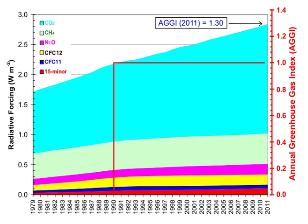The atmospheric lifetime of a species measures the time required to restore equilibrium following a sudden increase or decrease in its concentration in the atmosphere. Individual atoms or molecules may be lost or deposited to sinks such as the soil, the oceans and other waters, or vegetation and other biological systems, reducing the excess to background concentrations. The average time taken to achieve this is the mean lifetime.